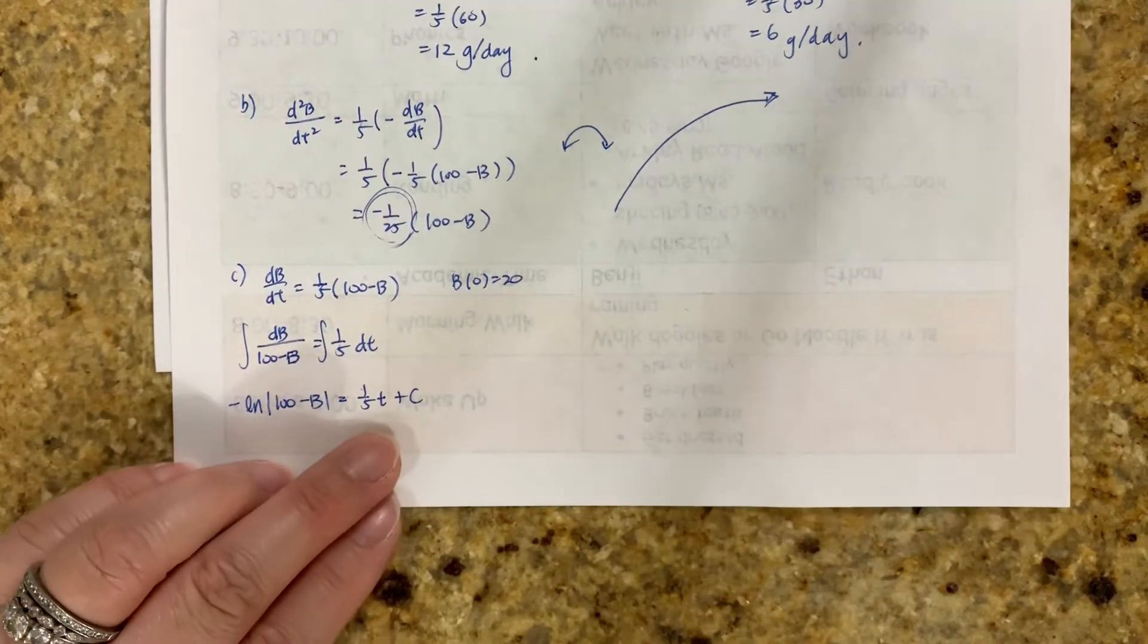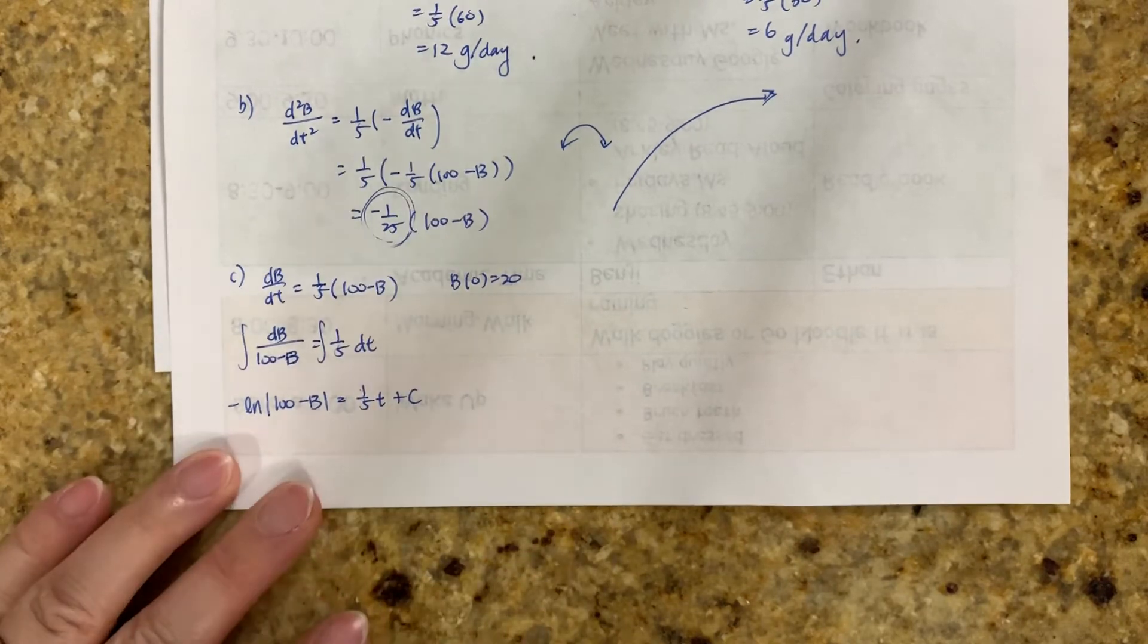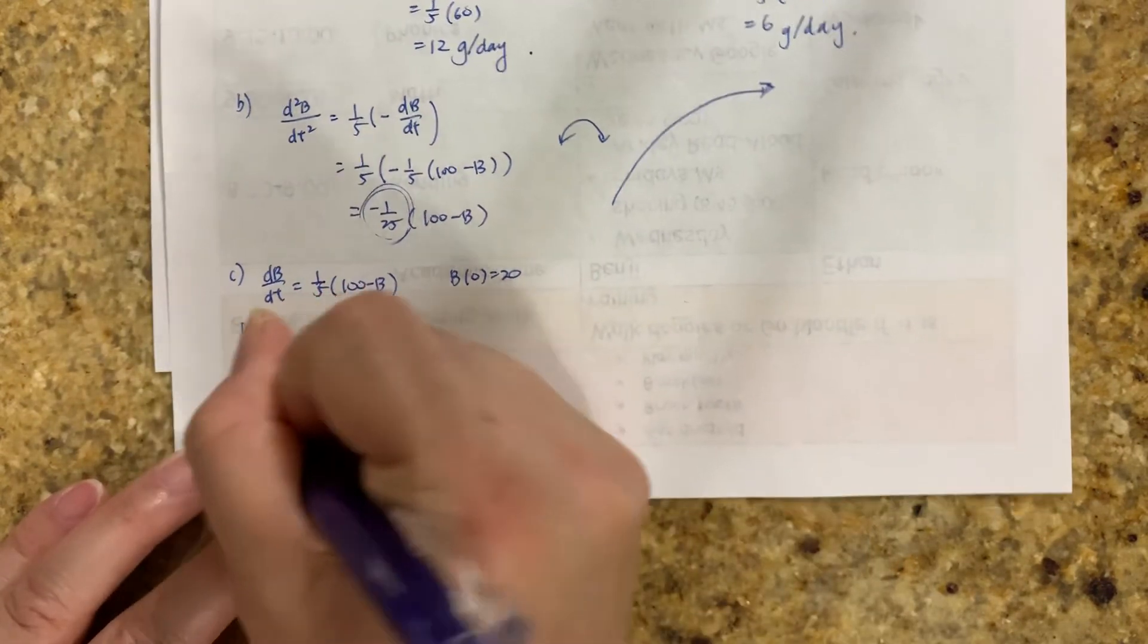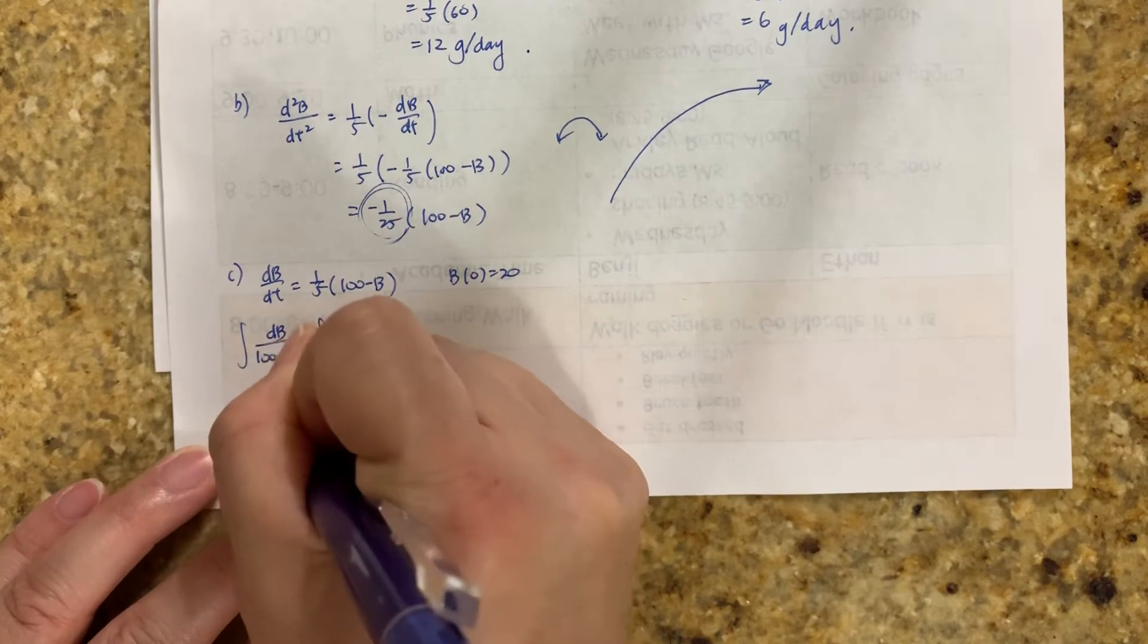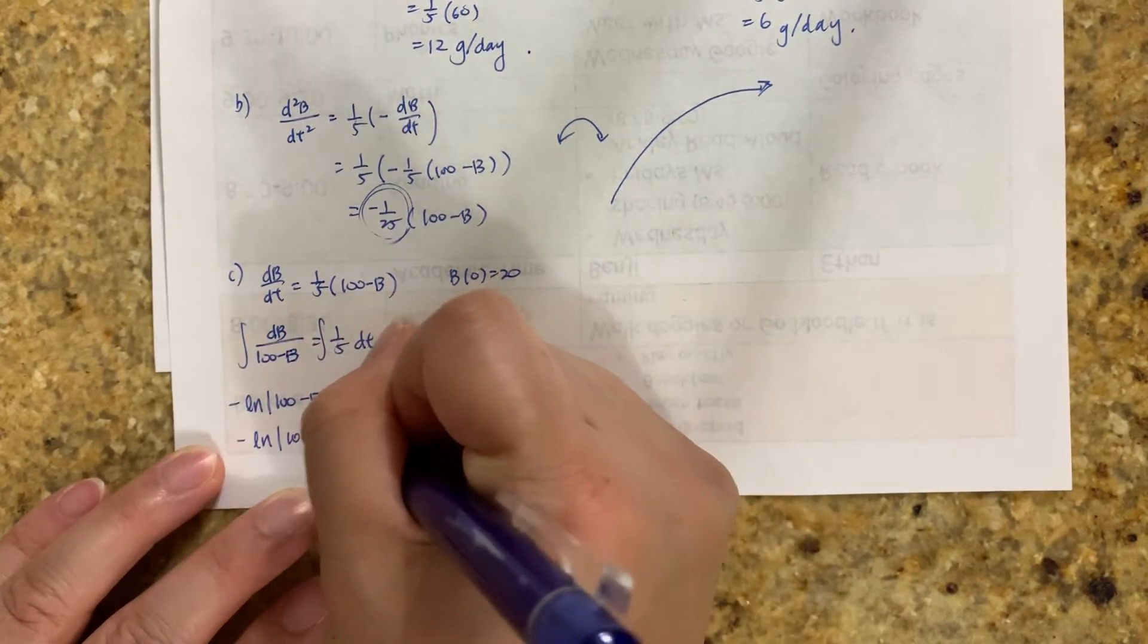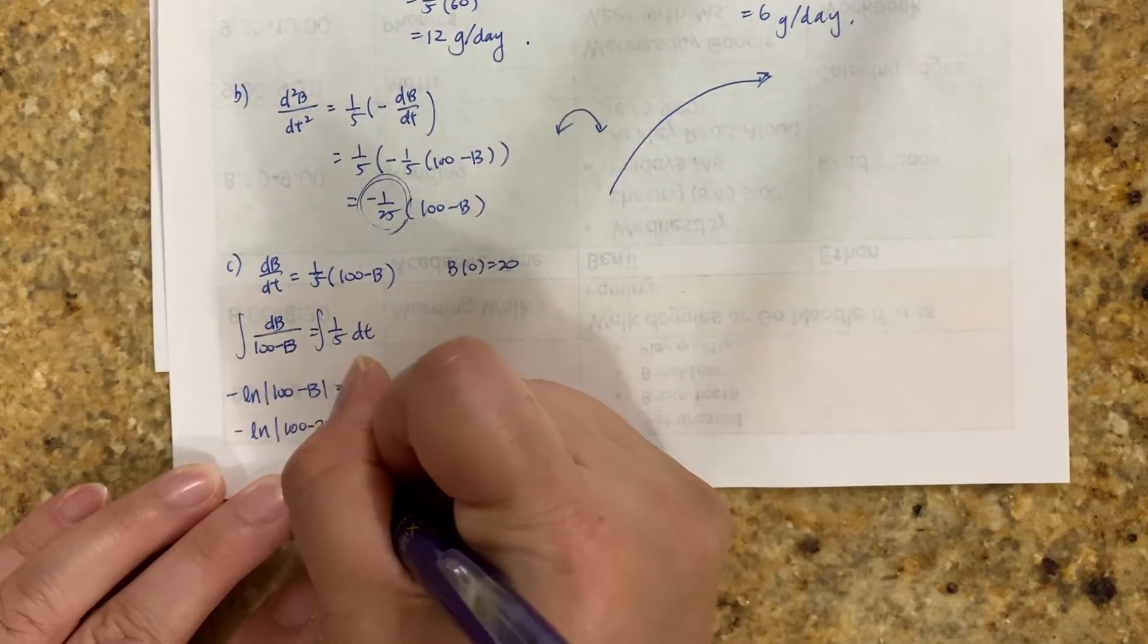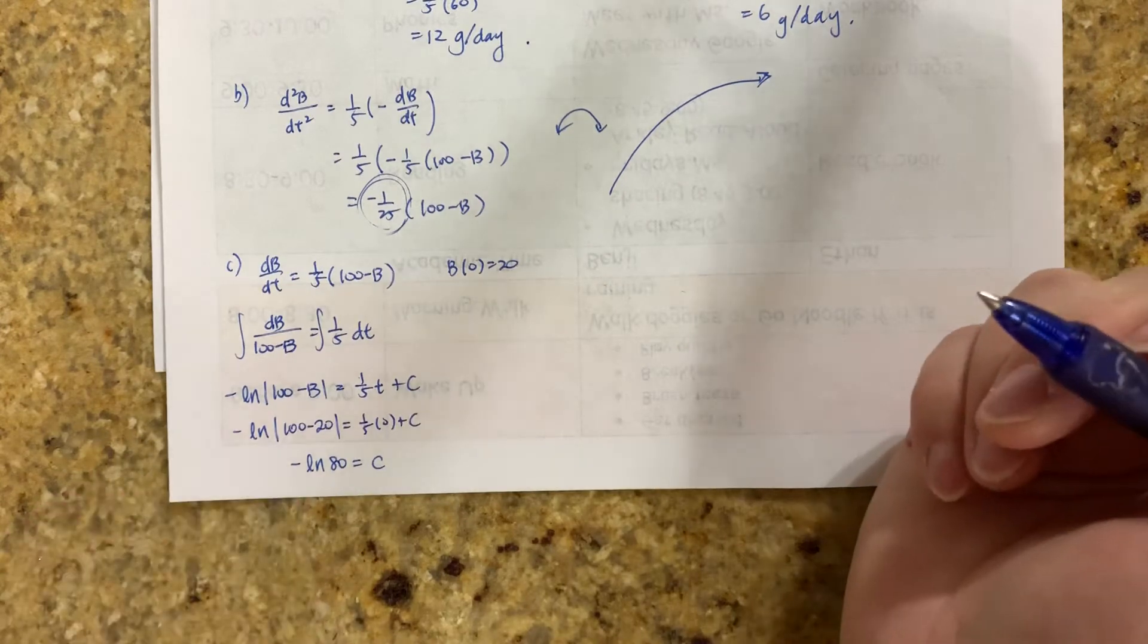At this point, the minute you have your plus c, plug in your initial value. So 0 for x, 20 for your b. So this is negative natural log of 100 minus 20 equals 1/5 times 0 plus c. So negative natural log of 80 equals c. That's pretty good.